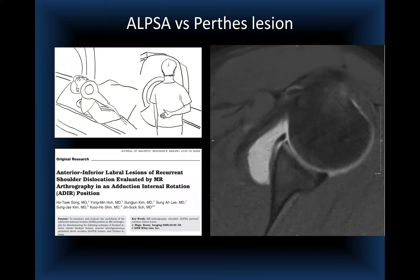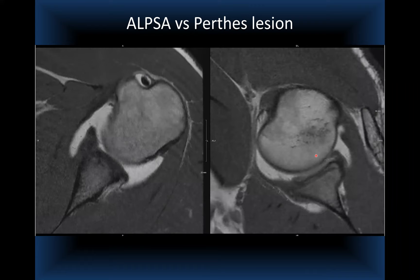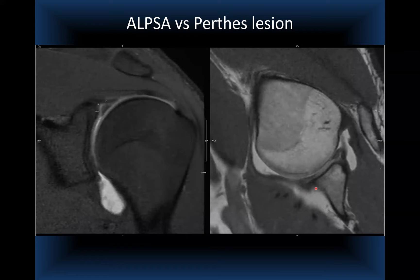A 2006 Journal of MRI article on the ADDIR position for evaluation of anterior inferior instability lesions is referenced. This patient was collaborative and could do both ABER and ADDIR. On ABER, a posterior labral peel-back tear is visible, along with the complete anterior labral tearing extending anteroinferiorly.